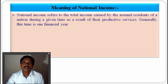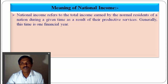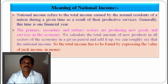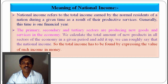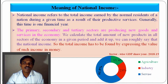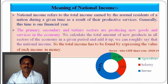In general, national income refers to the total income owned by the normal residents of the nation during a given time period, typically one year from 1st April to 31st March, as a result of their productive services. The primary, secondary, and tertiary sectors produce new goods and services. We calculate the total amount of new products in all sectors of the economy for a given period — the sum of all three sectors' production is national income.